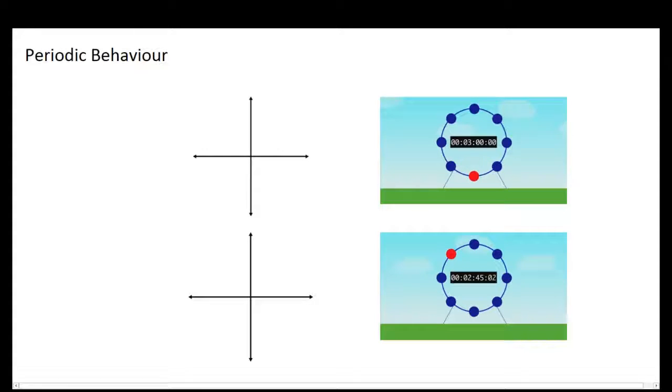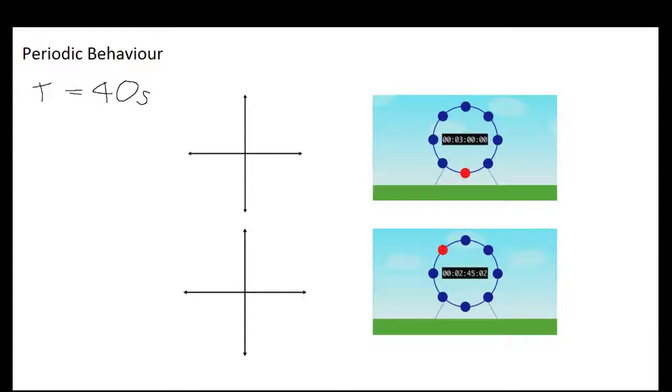So what you would say is that this Ferris wheel has a period of forty seconds. It is also worth noting that I have denoted the period with a capital T. This is a physics convention, not necessarily a maths one, but it'll come in handy if you are doing work in physics as well with this sort of behavior.